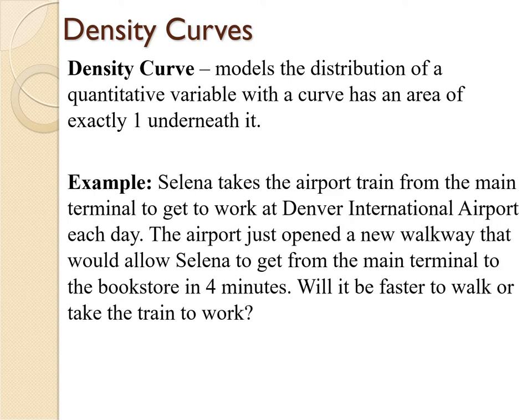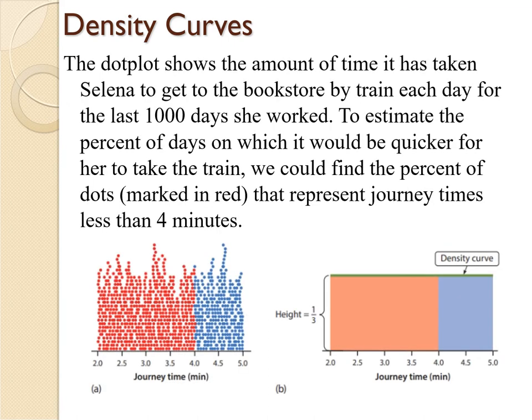For example, let's say Selena takes the airport train from the main terminal to get to work every day. The airport just opened a new walkway that allows her to get to the bookstore that she works at in four minutes. Will it be faster to walk or take the train to work? The problem is going to throw some data at us in the form of a dot plot, which shows the travel times for the last 1,000 days that Selena arrived at work by walking.